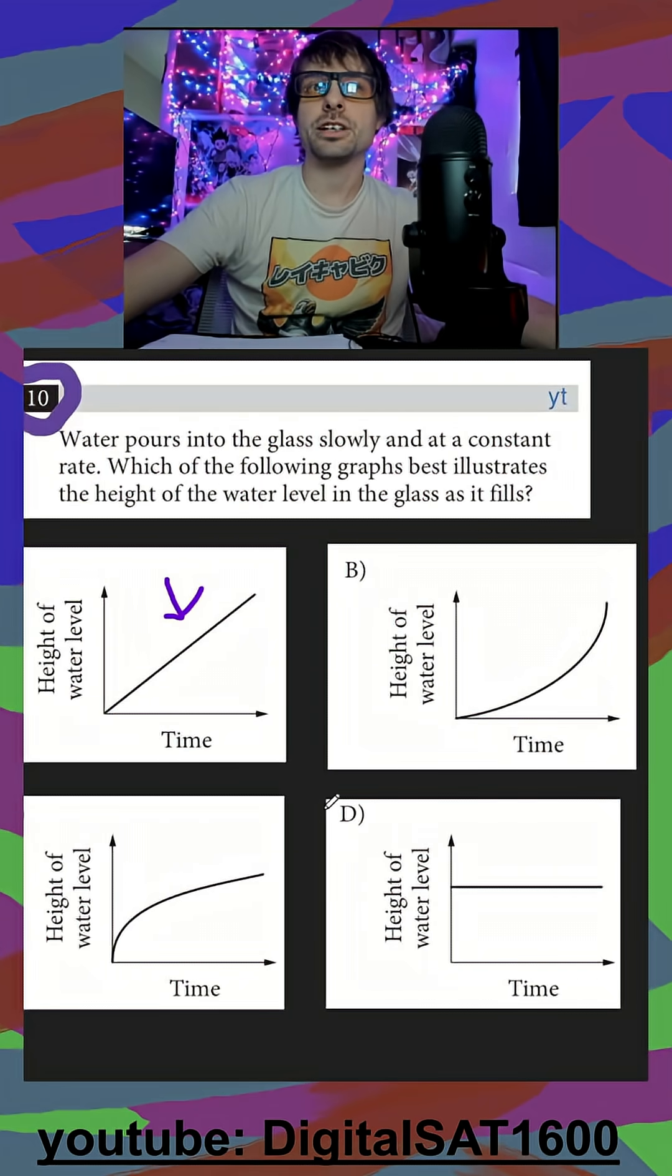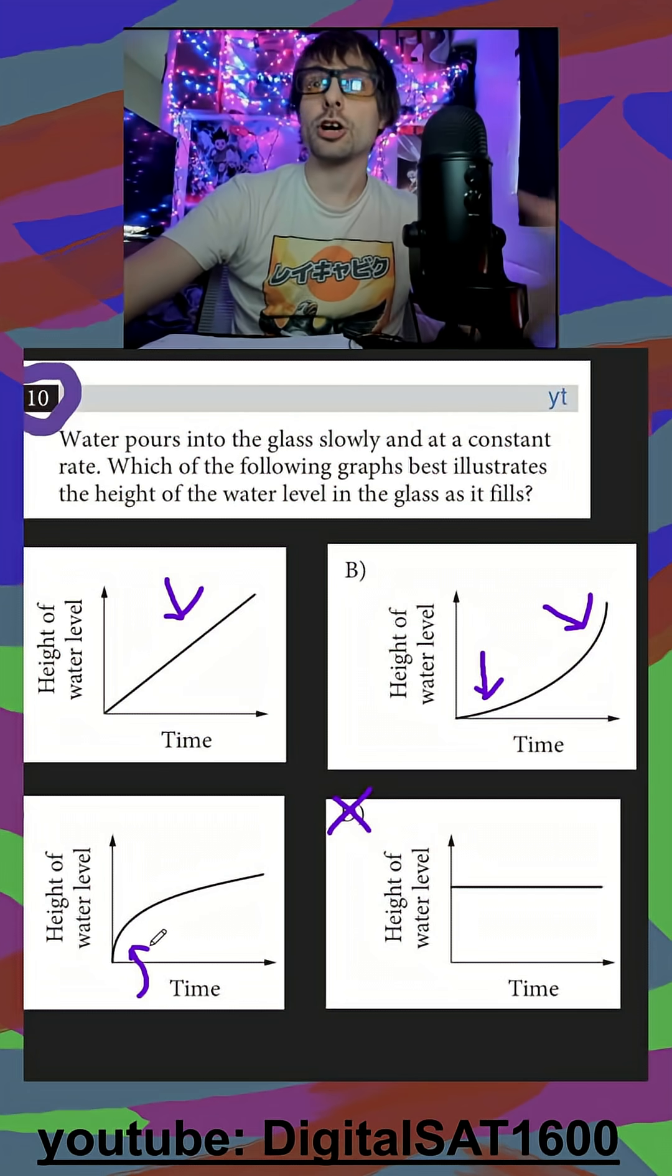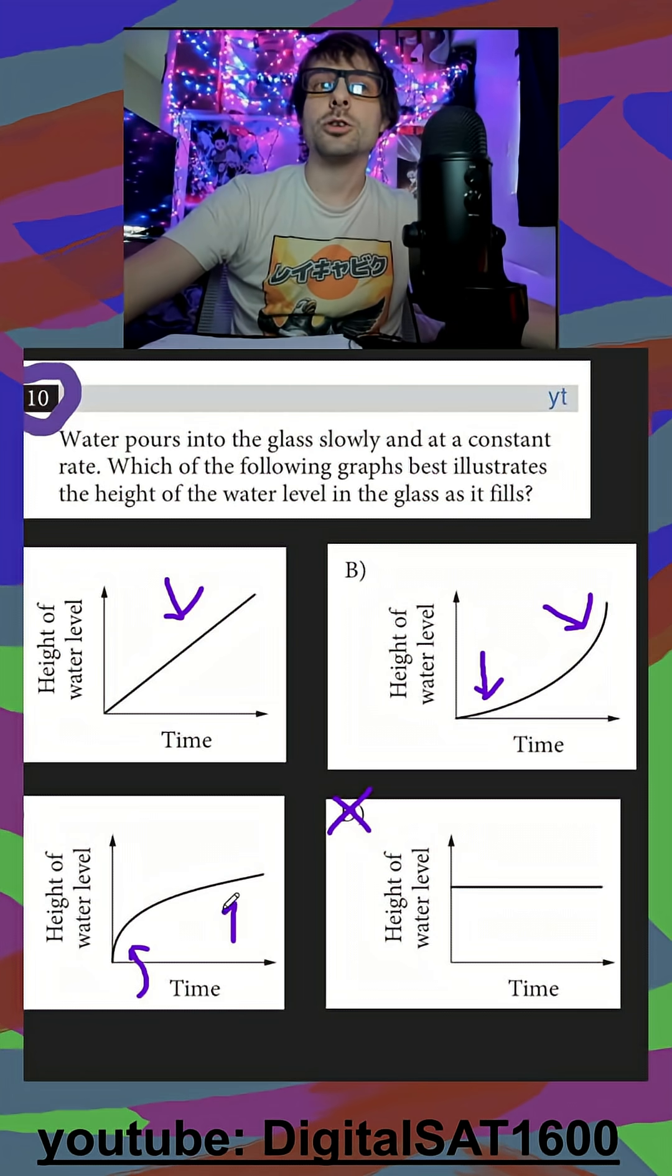So we have two exponential graphs here, this would just be the same height the entire time. This one is slow at the beginning, and then speeds up, which would be the inverse of what we see. This one is saying fast at the start, because it's smaller at the bottom, and then it slows down as the cup gets wider. It's going to be C here.